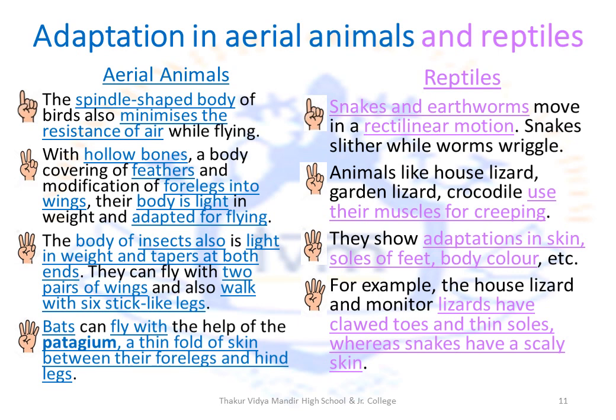Flying lemurs have flaps of skin spread between arms, legs and tail stretched out so that they can glide from tree to tree. They have clawed hands and feet for clinging onto trees. Moving on to reptiles: snakes and earthworms move in a rectilinear motion by contracting and relaxing their muscles — snakes slither while worms wriggle. Animals like house lizard, garden lizard and crocodile use their muscles for creeping. They show adaptations in skin, soles of feet and body color — basically to protect themselves from predators, blend in with surroundings and move easily. House lizard and monitor lizards have clawed toes and thin soles, whereas snakes have scaly skin to protect them from predators.